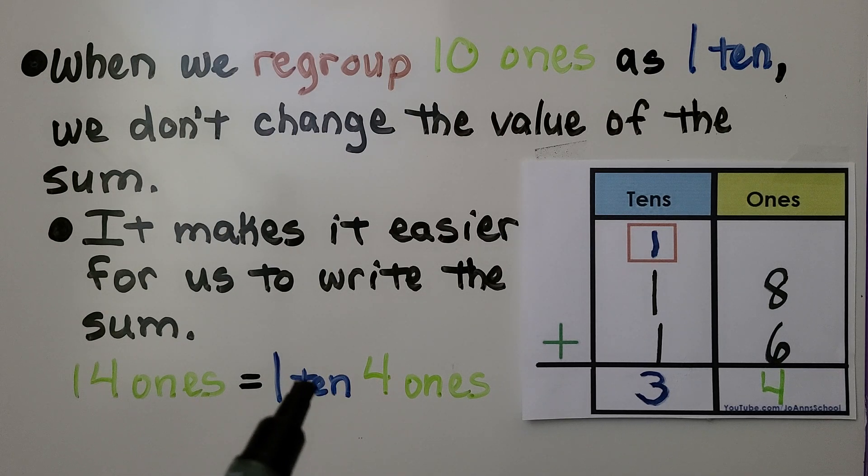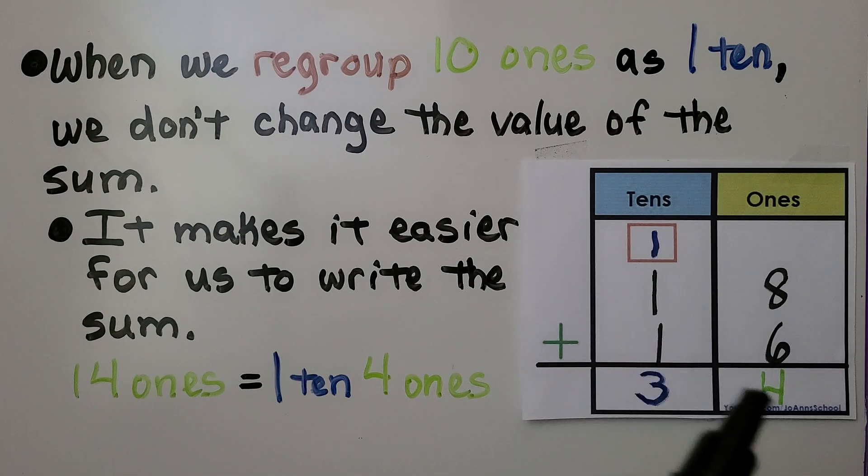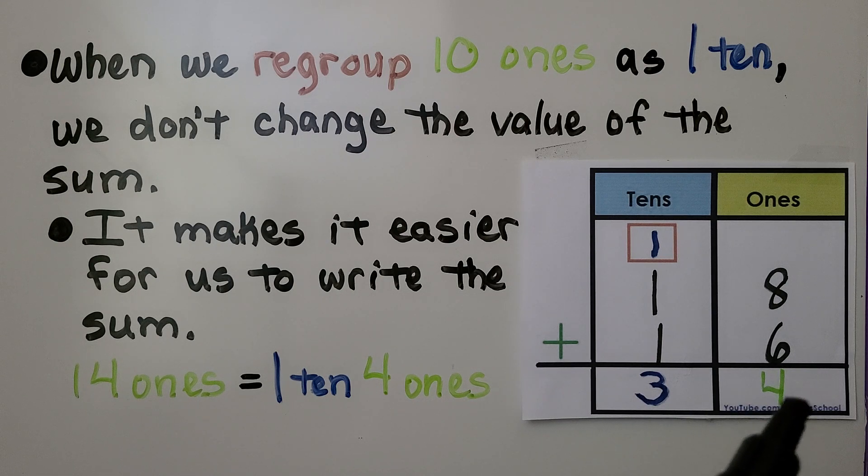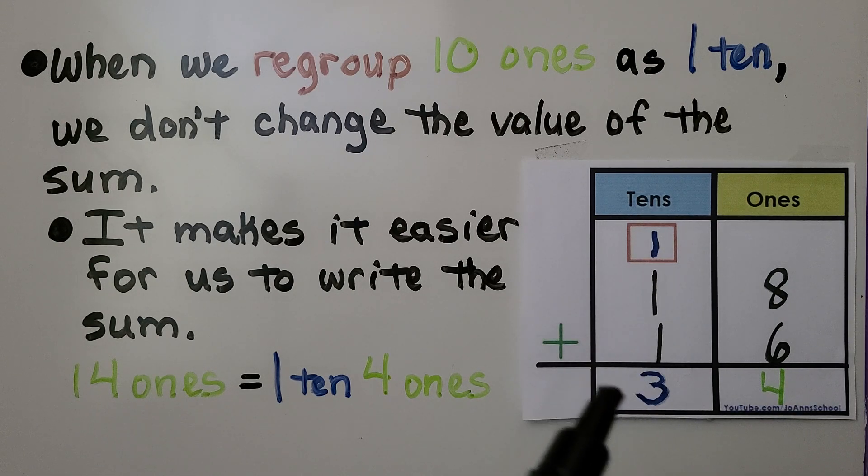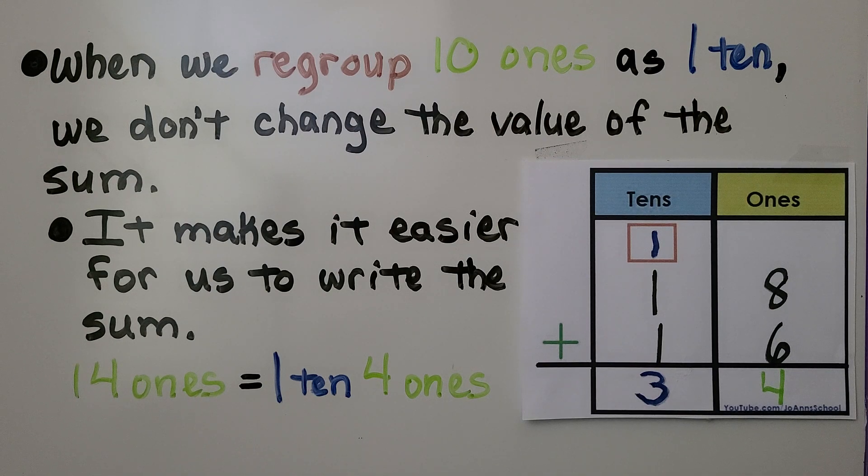We regroup this one ten into the tens column. We write the four ones in the ones column. Then we add the tens. One, two, three tens. 18 plus 16 is equal to 34.